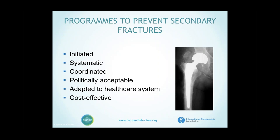Implementation of secondary fracture prevention programs first needs to be initiated — and that is actually the first hurdle. It needs to be systematic; it is not sufficient with just one person doing it, because it needs to go into the system to be sustainable. It needs a coordinator — one person in charge — otherwise it tends to fall between the chairs. It needs to be politically acceptable; so far it often hasn't been, as politicians and the public think it is natural to have a fracture and there is nothing to do. We have to present a case acceptable to politicians and payers. It needs to be adapted to the healthcare system and it needs to be cost effective.